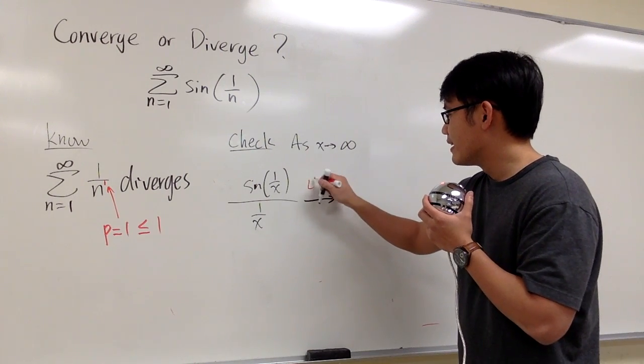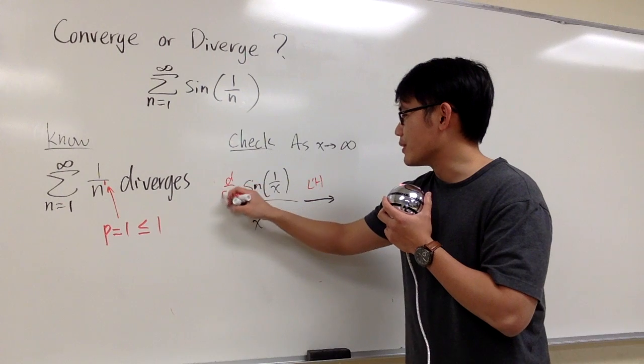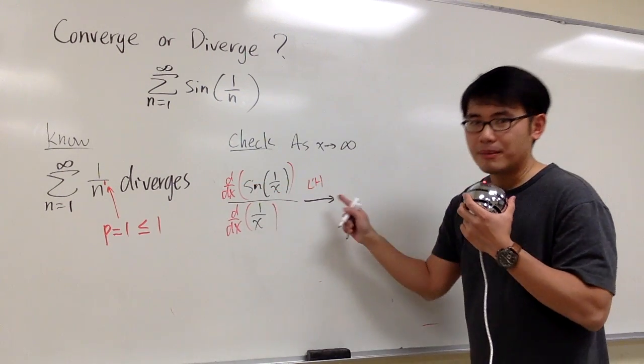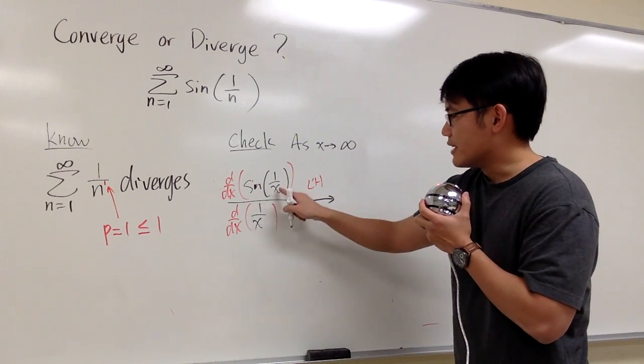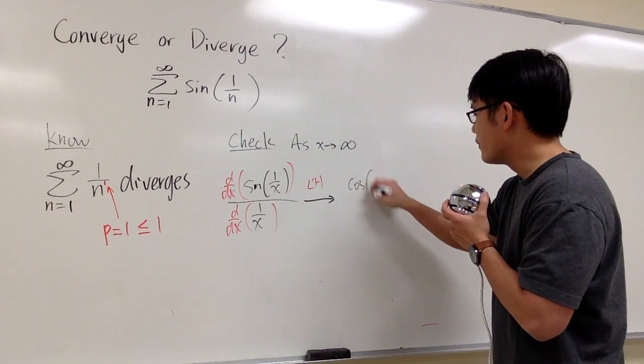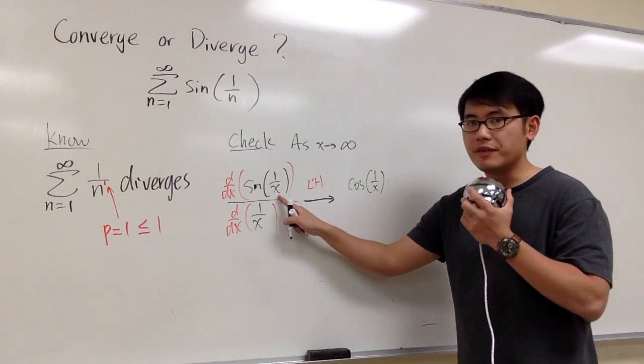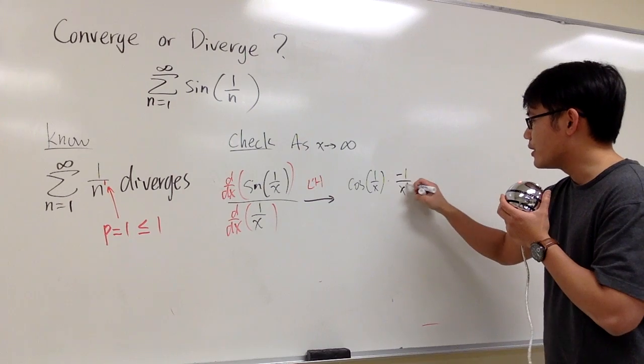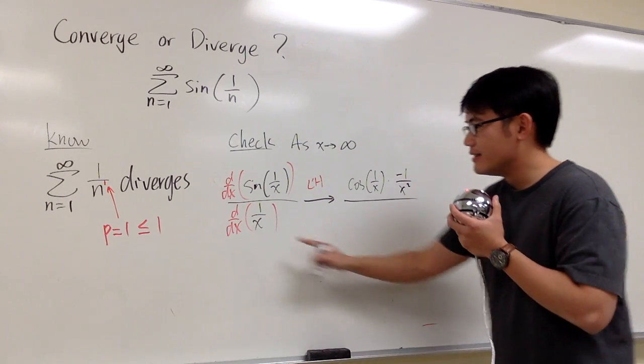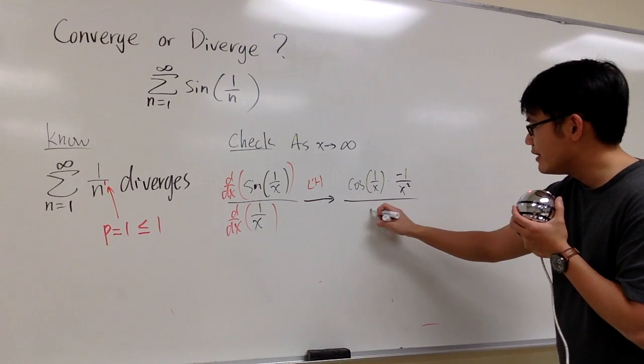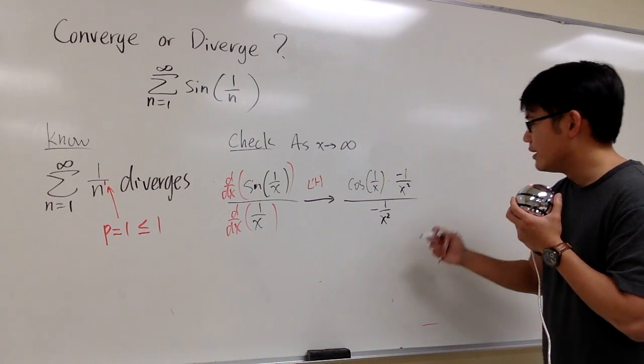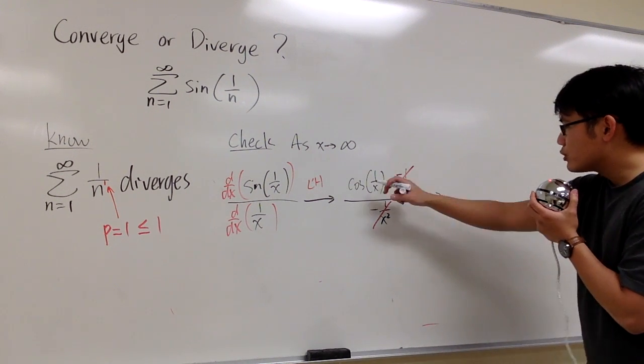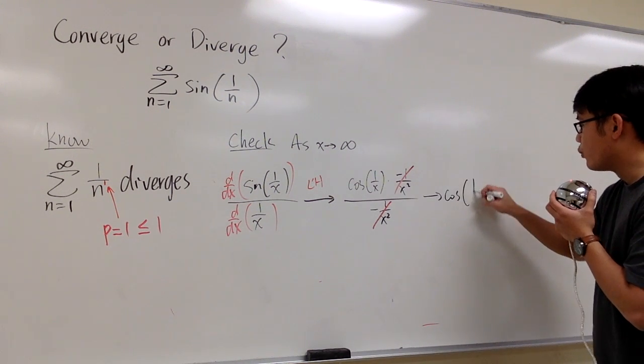Now, we take the derivative on the top, so d dx, and then d dx on the bottom. By applying L'Hôpital's rule, derivative of sine of something becomes cosine of the same thing inside, and then we multiply by the derivative inside. Right, derivative of 1 over x is negative 1 over x squared. Over, derivative of 1 over x is also negative 1 over x squared. And we're pretty lucky because this and that, they cancel completely. And then, we pretty much just have cosine of 1 over x.